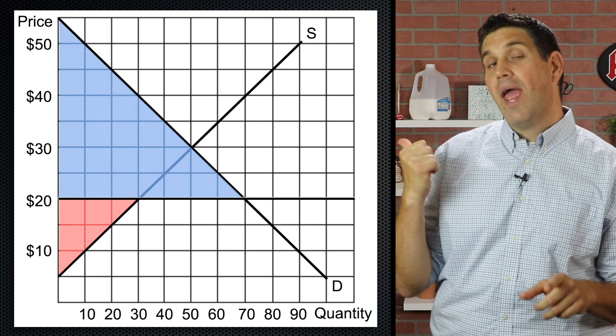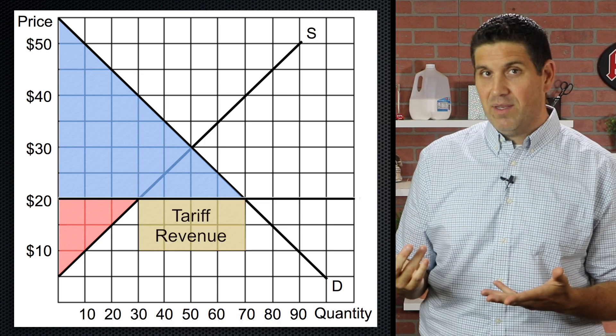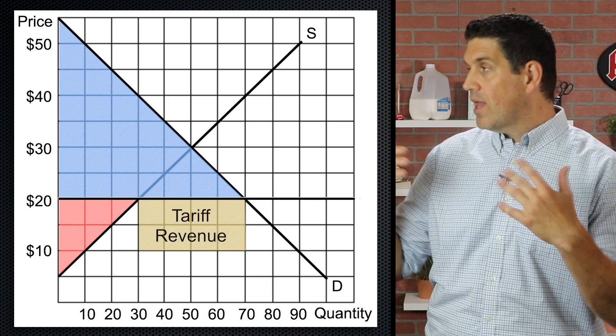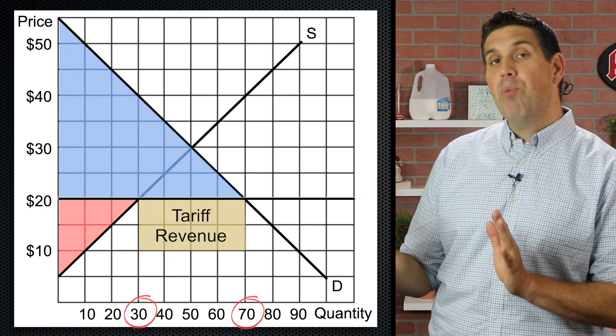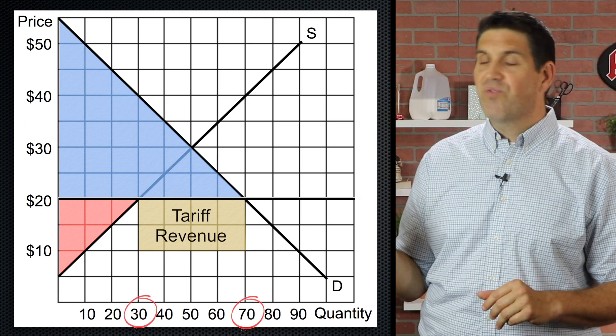But do you see the box of tariff revenue generated by the government? It's this box right here. That's the tariff revenue generated by the government by putting on the tariff. Remember it was a $10 tariff and we're importing 40 units, 10 times 40, $400.